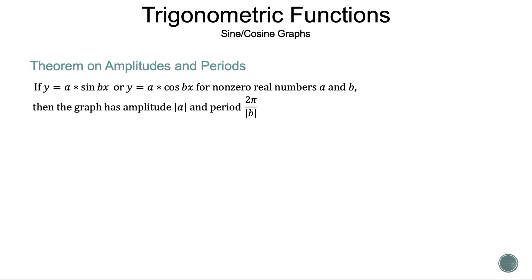Now let's take a look at some theorems for sine and cosine graphs. We have the theorem on amplitudes and periods. If y is equal to a times sine of bx, or y is equal to a times cosine of bx, for non-zero real numbers a and b, then the graph has amplitude, which is the absolute value of a, and period, which is 2π over the absolute value of b.